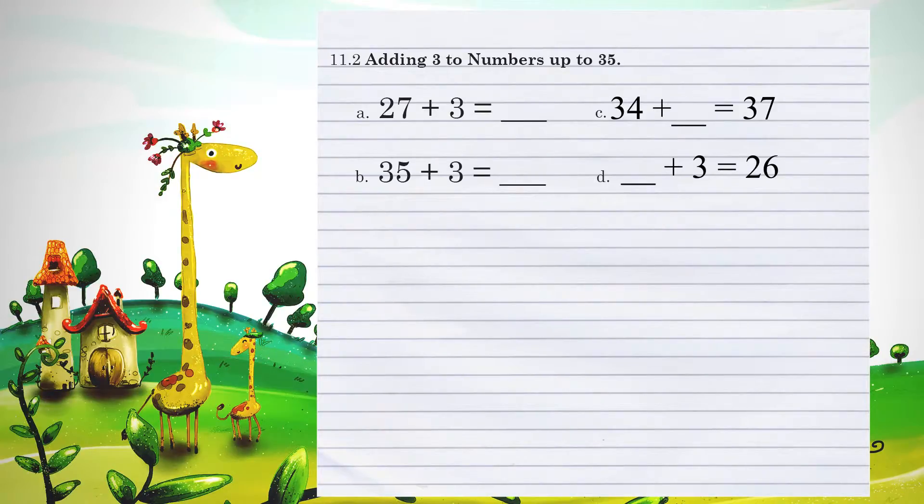Let's look at Unit 11.2, adding 3 to numbers up to 35. 27 plus 3 is example A. Here I'm going to take a look at taking the 3 and adding it to the 7 in the 1s column since they are both in the 1s position. 7 plus 3 is 10. So we write down the 0 in the 1s position, carry the 1, then we can add the 10s positions. 2 plus 1 is 3 for an answer of 30.